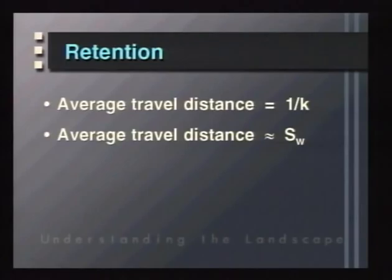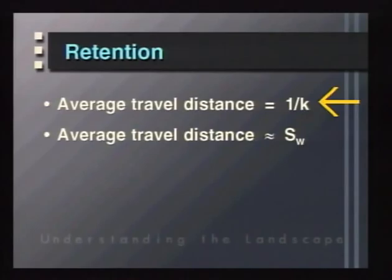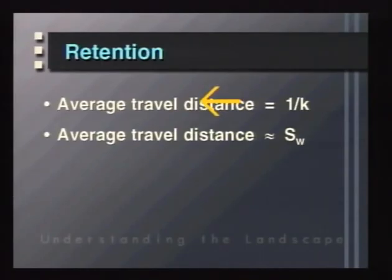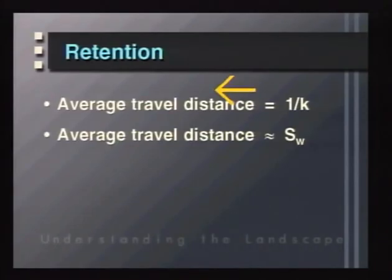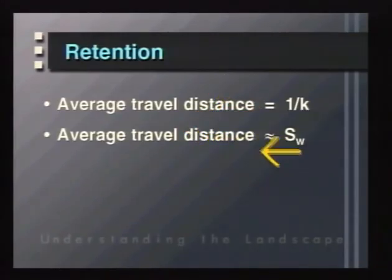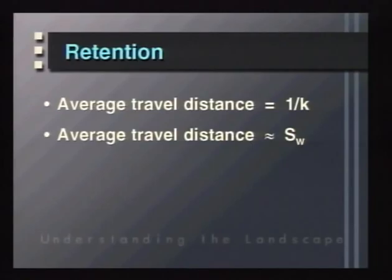This k value is the slope of the retention curves and determines the amount of material we find at any point downstream. We can use this equation to measure the efficiency of uptake by adding nutrients to a stream, measuring concentration downstream at different distances, and solving for the rate of retention. The average travel distance of an atom or molecule is equal to 1/k — the reciprocal of the retention coefficient — which is roughly equal to the spiraling length. This gives us a measure of how efficient our systems are at retaining nutrients.